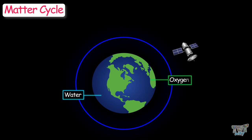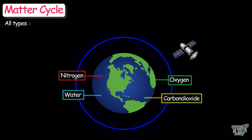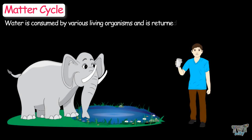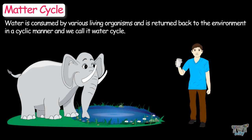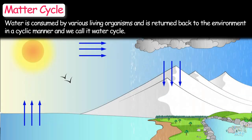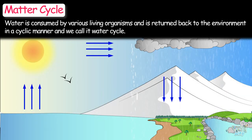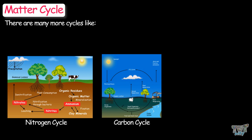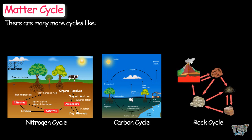Water, oxygen, nitrogen, carbon dioxide, and all types of matter maintain their percentage value in the Earth's atmosphere. Any matter — let's say water — is consumed by various living organisms and is returned back to the environment in a cyclic manner. We call this the water cycle. There are many more cycles like this: the nitrogen cycle, carbon cycle, rock cycle, etc. And all these cycles are called matter cycles.